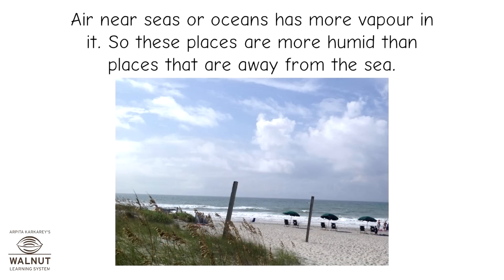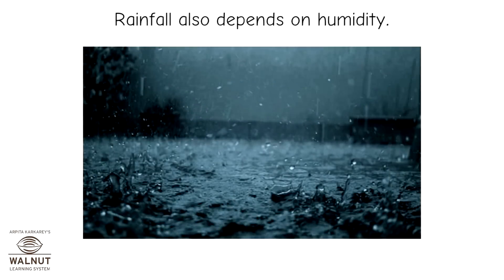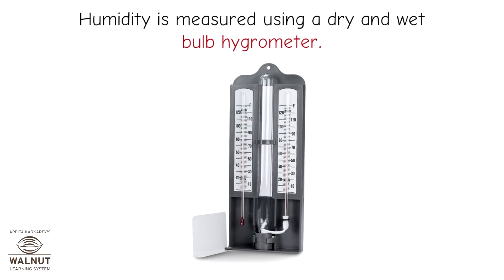Air near seas or oceans has more vapor in it, so these places are more humid than places that are away from the sea. Rainfall also depends on humidity. Humidity is measured using a dry and wet bulb hygrometer.